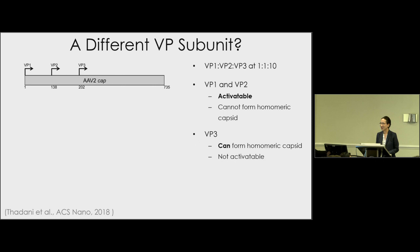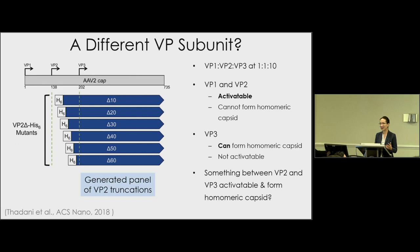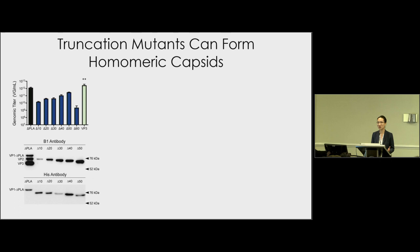We hypothesized that there must be a subunit in between the length of VP2 and VP3 — long enough to be activatable but short enough to form homoameric capsids. To test this, we generated VP2 truncation mutants, chopping off the N-terminus 10 amino acids at a time and placing a his-tag on the very N-terminus. Testing whether any of these truncation subunits could form homoameric capsids, the genomic titer data showed that as the subunit gets shorter, we produce more and more virus, approaching that of the VP3-only homoameric capsid.